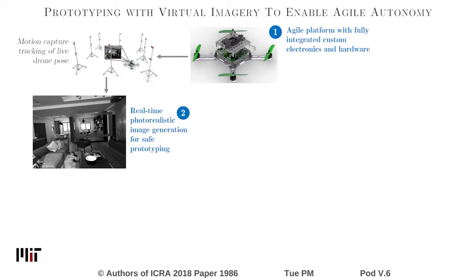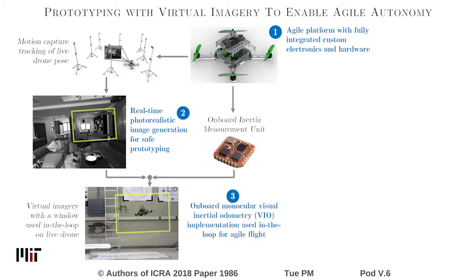We have built a visual development environment which may replace the drone's onboard camera with photorealistic images from a virtual environment while the drone is in flight. These photorealistic images may be used with the true inertial measurements in the onboard visual inertial odometry algorithm. Our visual simulation system allows us to develop this algorithm in challenging scenarios such as flying through open windows without the risk of crashing.